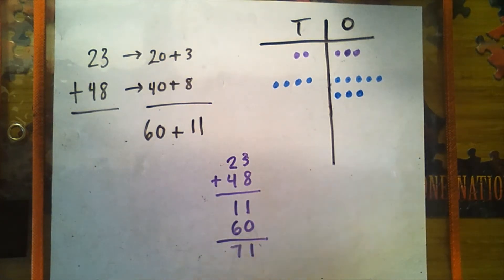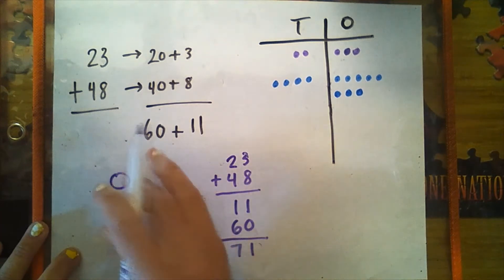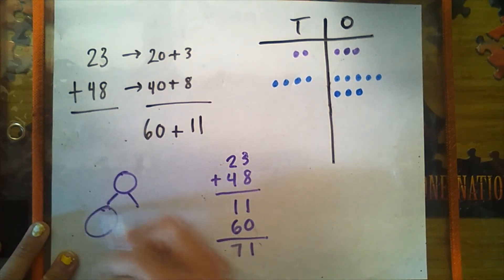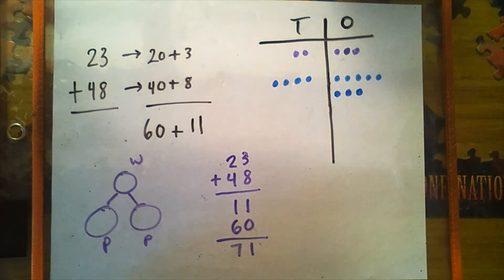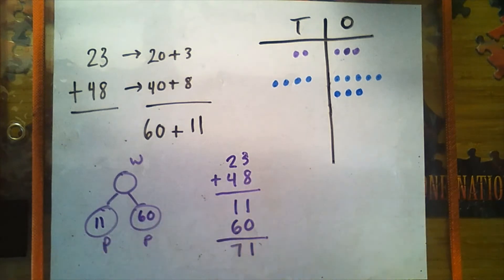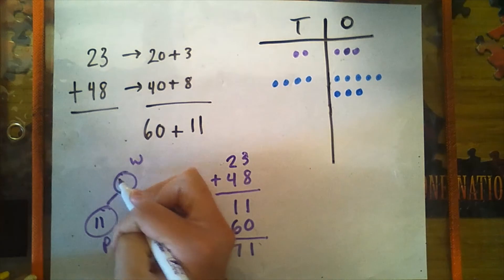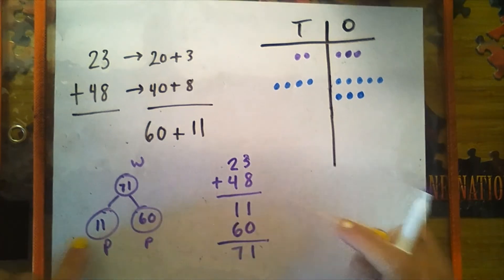Let's make a number bond of the parts when we add in this totals below method. I'm going to make that a little bit thicker and label whole and parts. Remember, we're drawing a number bond for the totals below method. So our parts would be 11 and 60. What is the whole? It's still 71. So 71 isn't just 23 and 48 — it's also 60 and 11.